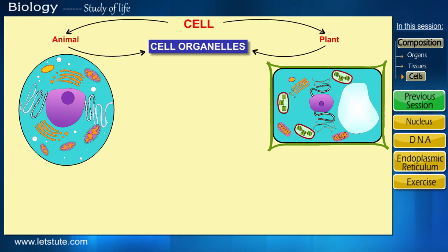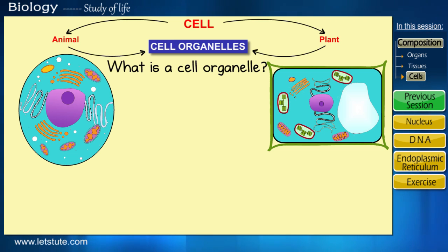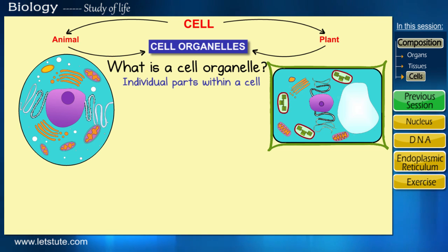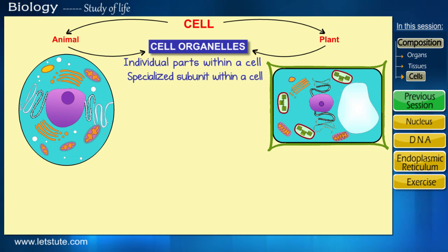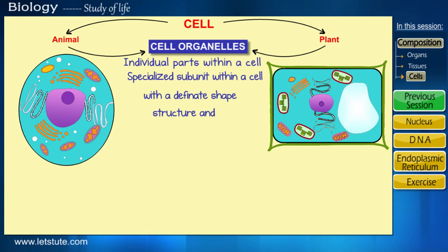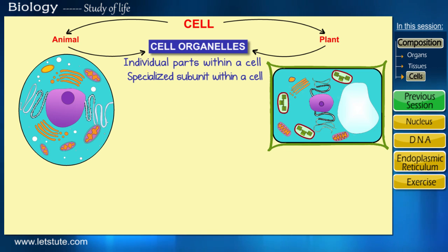So, what is a cell organelle? As you can see here, cell organelles are individual parts within a cell that work together to keep the cell alive and, in a broader picture, keep the organism alive. Scientifically, a cell organelle is defined as a specialized subunit within a cell with a definite shape and structure, which has its own individual membrane or covering. Now we will look at the organelles one by one in detail.